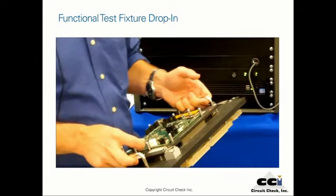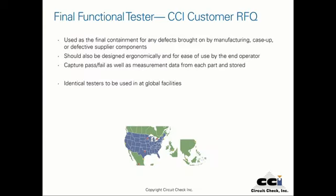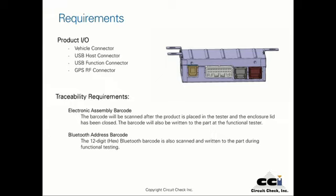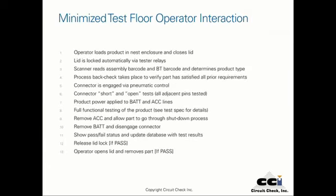CircuitCheck is one of the largest manufacturers of in-circuit, functional, and custom test fixtures for automated test equipment. To conclude our web seminar, let's take a case study example of a modular system CircuitCheck delivered to a Tier 1 automotive supplier that encompasses all of the modular components discussed earlier. The customer's RFQ called for a test system that could be supported globally and allow for growth as product volume increased, supporting both component board level and product level testing. Also important was traceability of product and test results, accomplished with an electronic assembly barcode — a barcode label resided on the module assembly and was also written into memory on the module by way of Bluetooth.